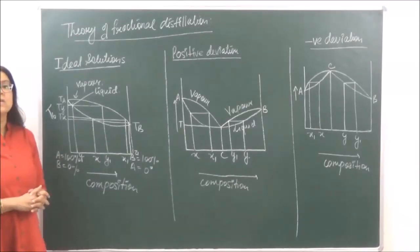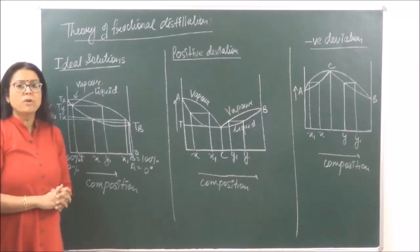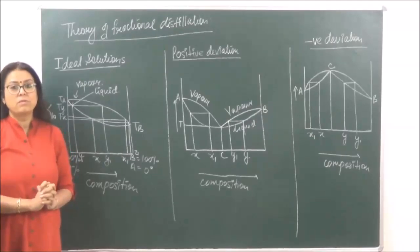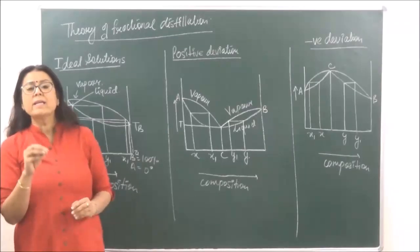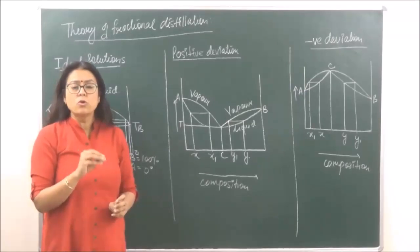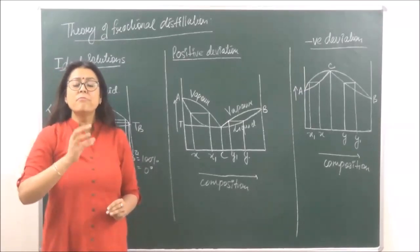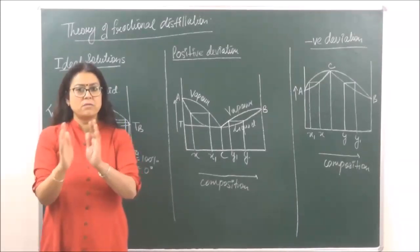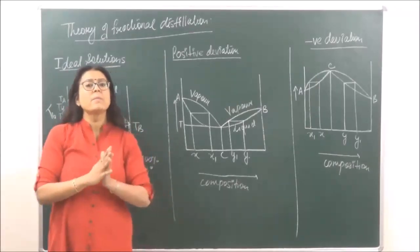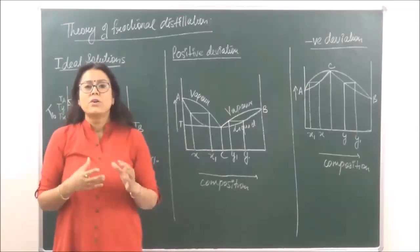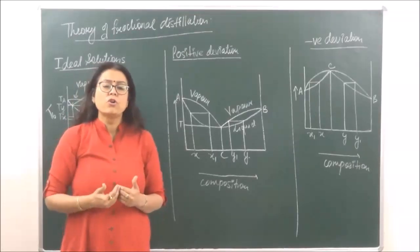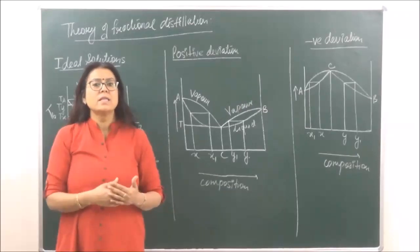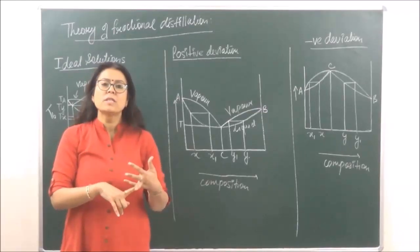It is very easy for us to study fractional distillation by way of graphical representation. I have already drawn the graphs for three types: ideal solutions, positive deviation, and negative deviation. It is said that we are able to separate the two liquids or the two components of any miscible mixture only if there is a difference in composition between the liquid phase and the vapor phase — meaning the composition of the liquid phase is different from the composition of the vapor phase. This composition is the mole fraction, which we had already done in Raoult's law. When we clubbed Raoult's law and Dalton's law, we get the mole fraction in the vapor phase.